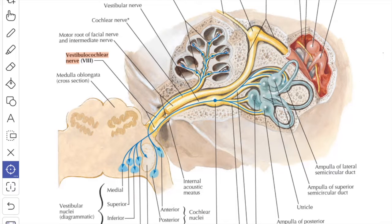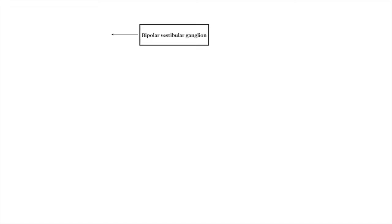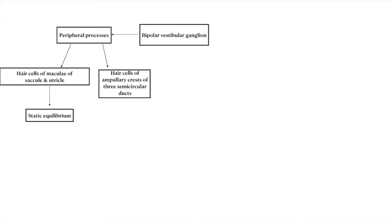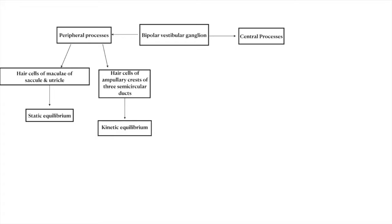The vestibular pathway begins at the bipolar vestibular ganglion, also known as Scarpa's ganglion. The peripheral processes supply the hair cells of the maculae of the saccule and utricle for static equilibrium, and the hair cells of the ampullary crest of the three semicircular ducts for kinetic equilibrium. The central processes from the bipolar vestibular ganglion form the vestibular nerve.